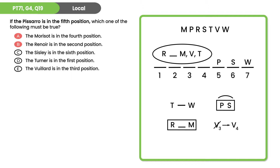Scanning the answer choices for those determined facts, we see W in seventh position in answer choice C — that's the right answer. Answer choice D doesn't have to be true since T could be in the fourth position, and V doesn't have to be in the third position since it could be in the fourth. We don't exactly know what happens in front of P, but we do know what happens after P.